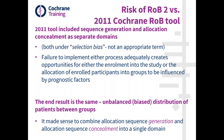The reason why we put sequence generation and allocation concealment into one domain is because failure to implement either process properly creates opportunities for either the enrollment into the study or the allocation of participants into the groups to be influenced by prognostic factors. In both cases, we get an unbalanced or biased distribution of patients between groups, and that's why it made sense to combine these into one single domain.